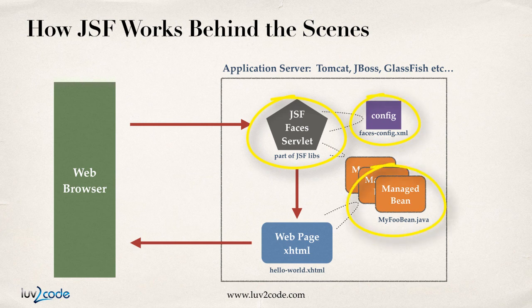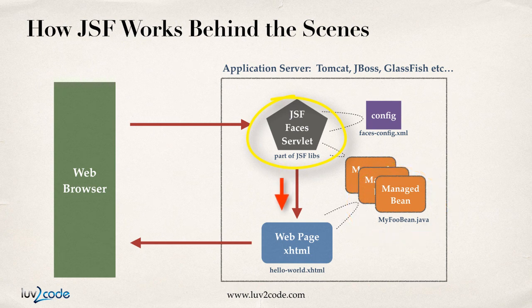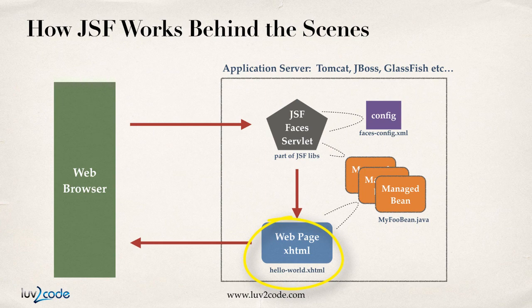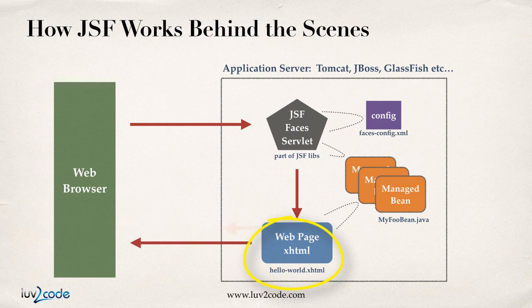The faces servlet can also make use of managed beans, which are basically just beans that hold form data or talk to your back-end processes, like maybe a database. The faces servlet will determine which page it needs to route to and route it to that appropriate web page — at the bottom, we have an xhtml page. This web page can also make use of the managed beans to retrieve or display information from the back-end system. The web page is rendered and sent back to the web browser — it could show basic information like a welcome message with the user's name, or it could display the results of a database query. That's how JSF works at a very high level.